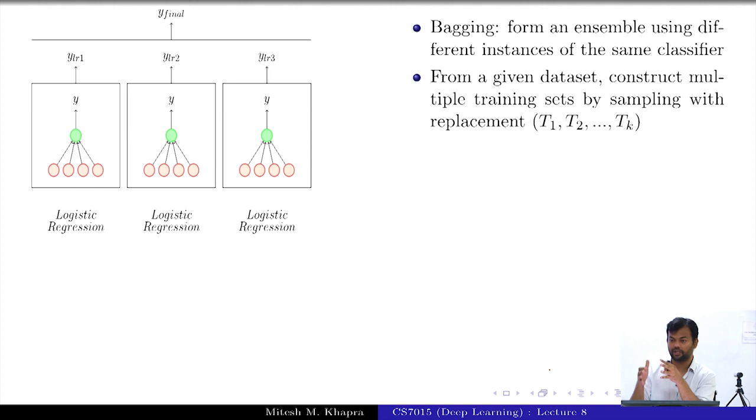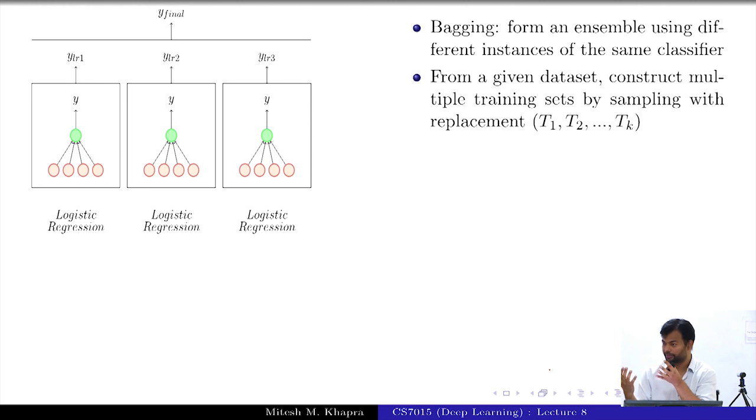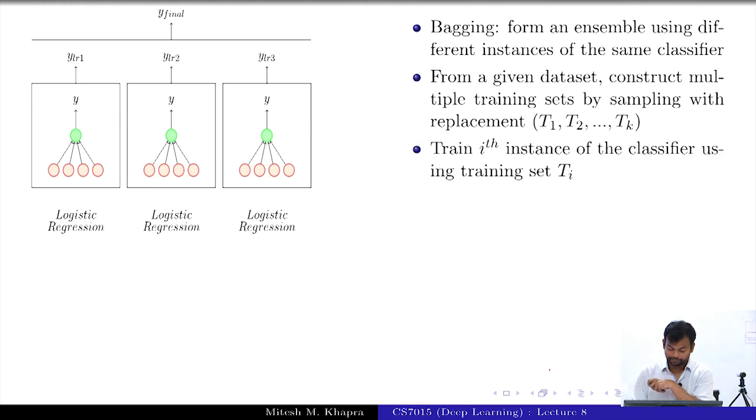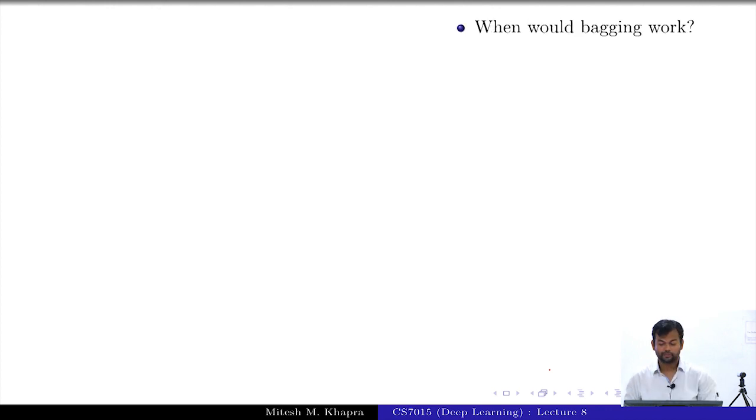One classifier is trained on subset T1 of the training data, another on subset T2, and so on. Each of these models is trained with a different sample of the data. When would bagging actually work? What would you want these classifiers to be? Each classifier is going to make certain errors. What do you want these errors across classifiers to be? Independent — if one classifier makes errors on certain test instances, another makes errors on a different set, and the third on yet another different set. That is the condition you are looking for.